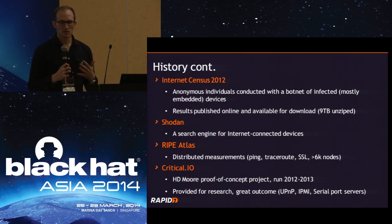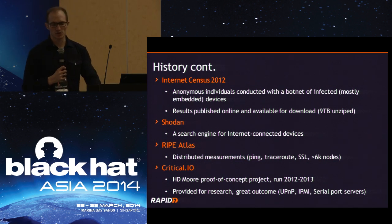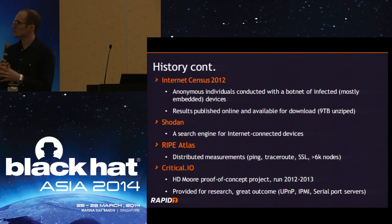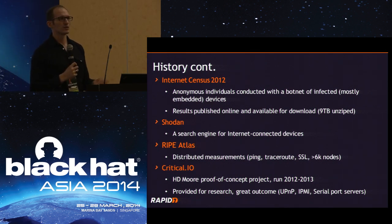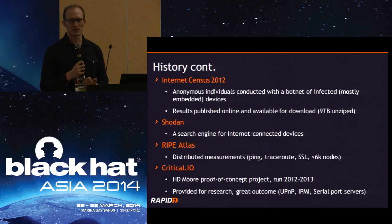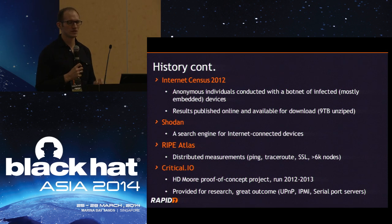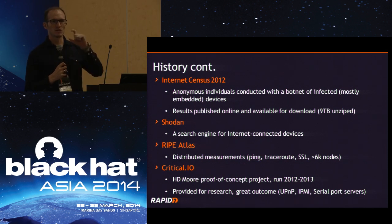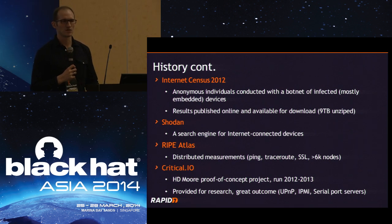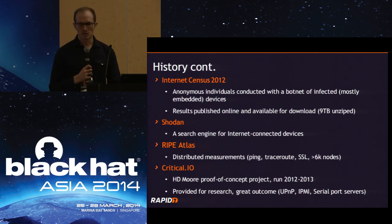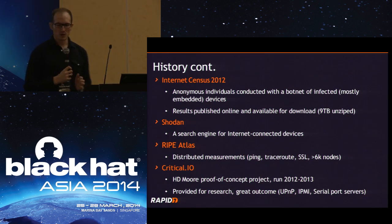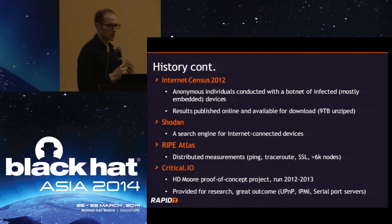There are different projects not necessarily gathering data but used for measurements. There's the RIPE Atlas, which has over 6,000 nodes spread around the world that people just host. RIPE gives these small devices to people, they plug them in at home, and they're used for distributed measuring of round trip times and so on.